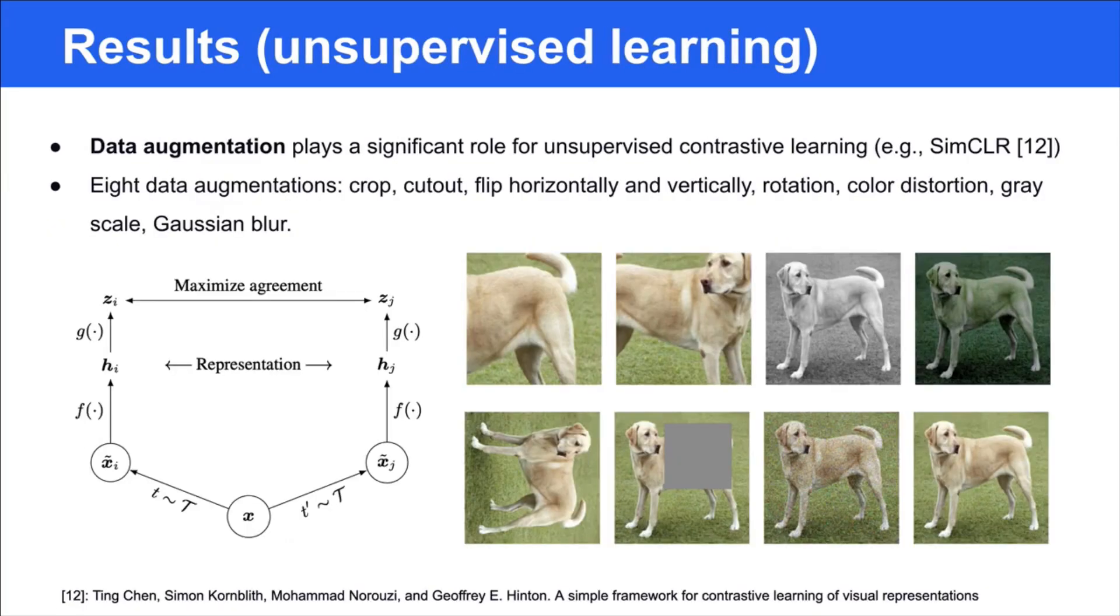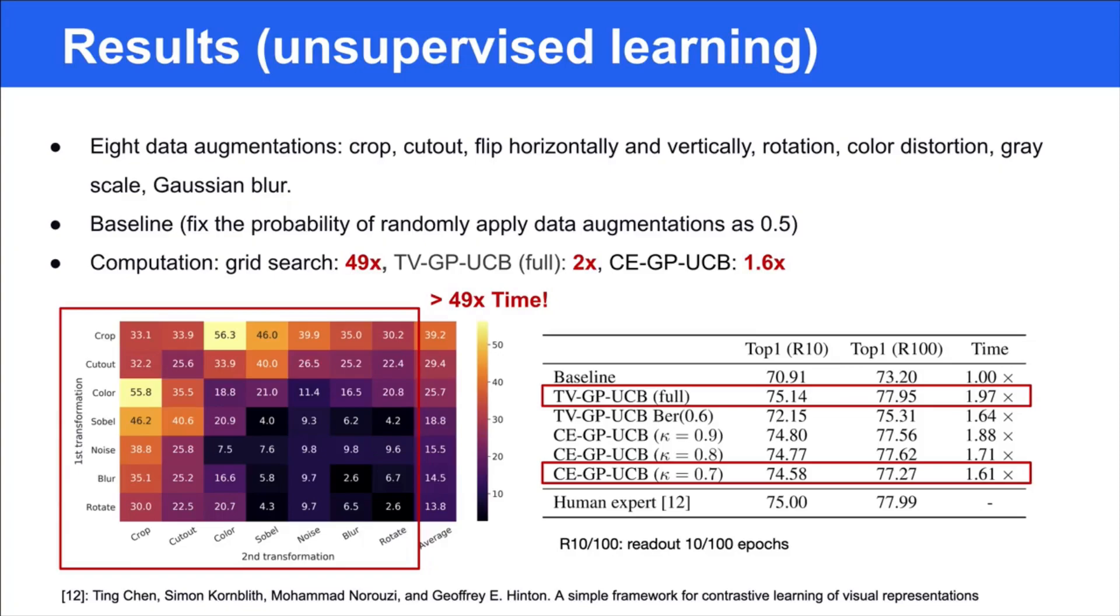Finally, we evaluate our method on tuning data augmentations in unsupervised contrastive learning. The goal of unsupervised learning is to learn meaningful representations directly from unlabeled data, since acquiring annotations is expensive. SimCLR is a state-of-the-art approach that learns representations by maximizing agreement between differently augmented views of the same data example. It's shown in the original paper that the types of data augmentations are critical in learning meaningful representations. In this paper, we follow the original setting and consider eight data augmentations shown in the figure.